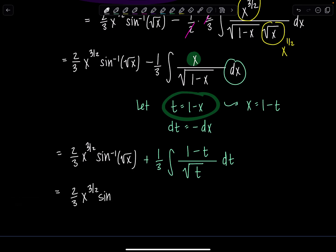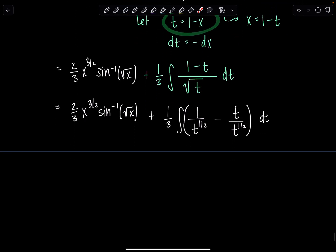So 2 thirds x to the 3 halves, sine inverse rad x, it's just hanging tight out there. Integral 1 over square root of t, so that's 1 over t to the 1 half, minus t over square root of t, t over t to the 1 half dt. You couldn't have done that earlier because we had this radical with two terms. That's all trapped together, but see how nice and fancy free this is with one little term. Carrying on, 2 thirds x to the 3 halves, sine inverse of rad x. And then let's think to ourselves, we can probably do some of this in our head. This is t to the negative 1 half power, and then this is t to the positive 1 half power. So plus 1 third integral t to the negative 1 half minus t to the 1 half dt.